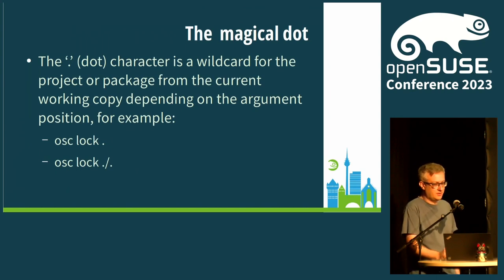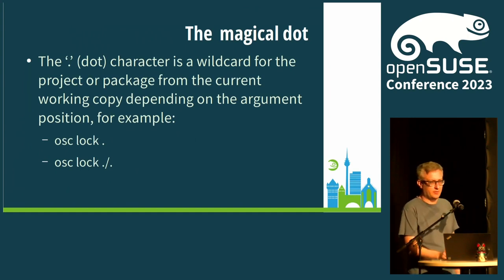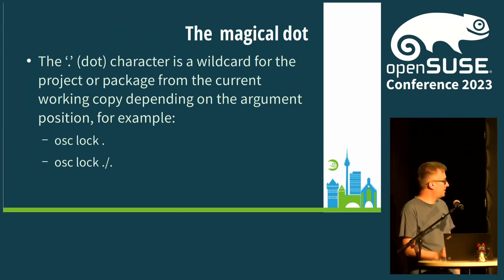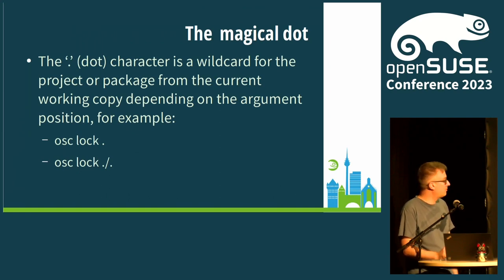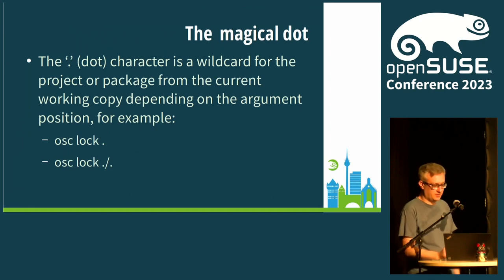There's also a new feature in OSC 1.0 — the magical dot character. It's like a wildcard and if you use it, it expands to either the project or the package from the current working copy, basically based on the position of the argument. So for example, OSC log dot expects a project, so the dot expands to the current project related to the working copy. Or if you do dot space dot or dot slash dot, then you're logging a package that corresponds with the working copy.